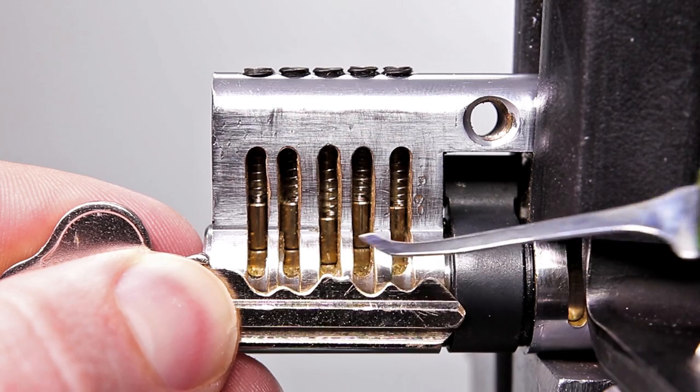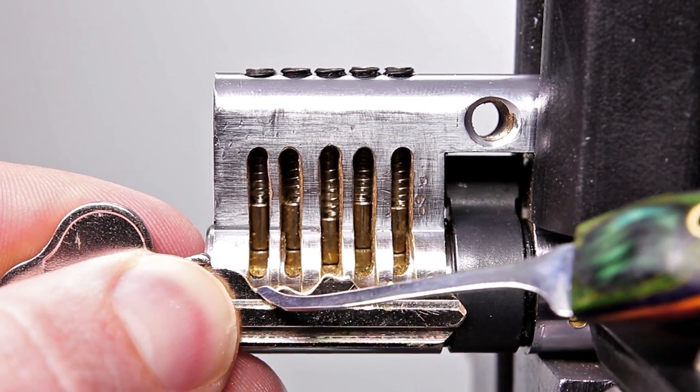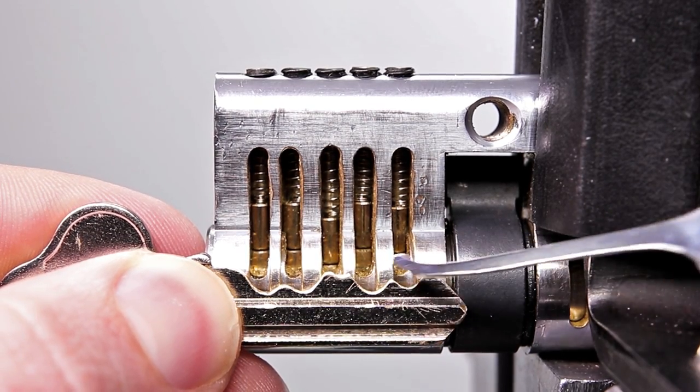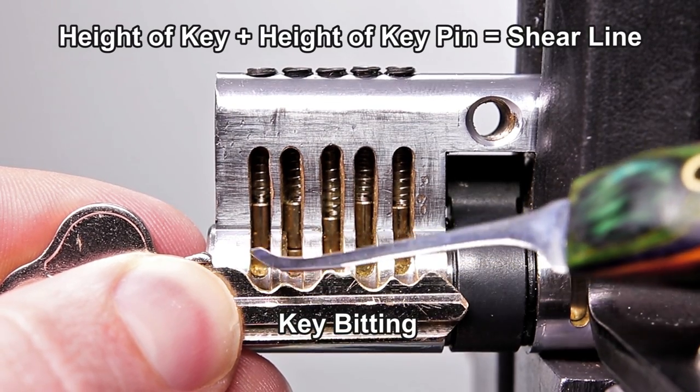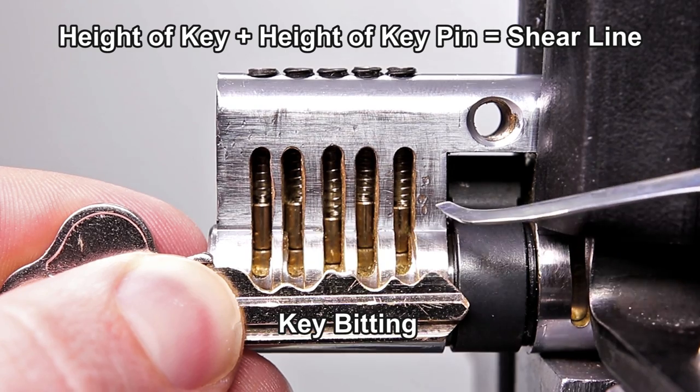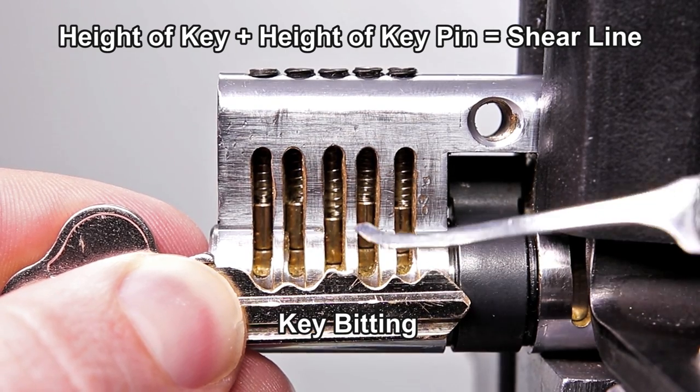You can see one, two, three, four, five. Each portion of the key is going to have different raised areas, and this is called the key bitting. The height of the key plus the height of the key pin are all going to equal the same height going across, which is going to make the shear line.